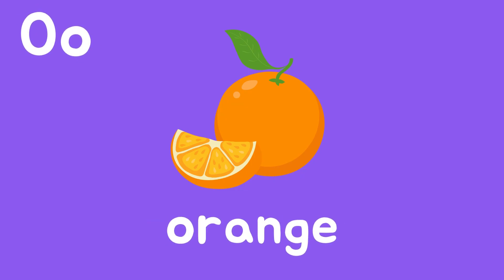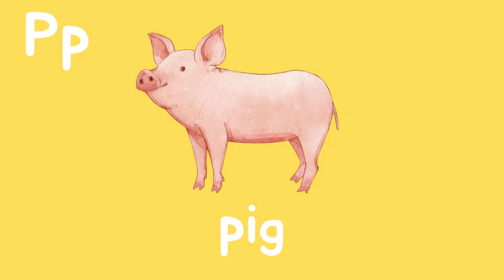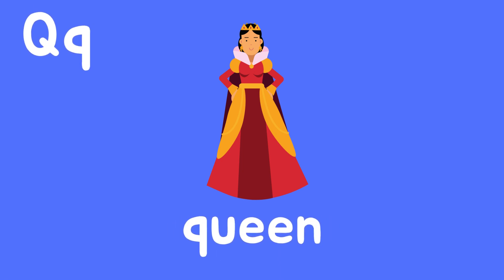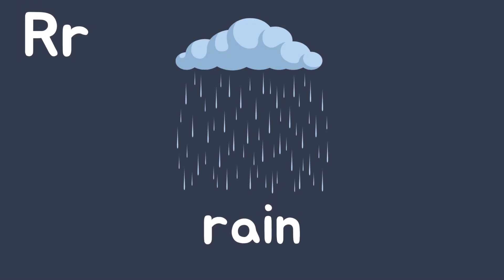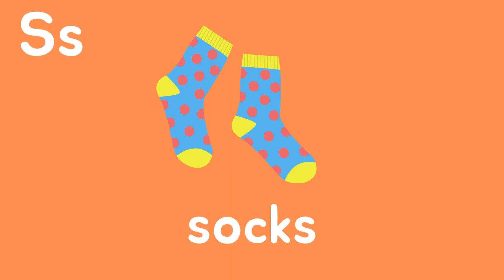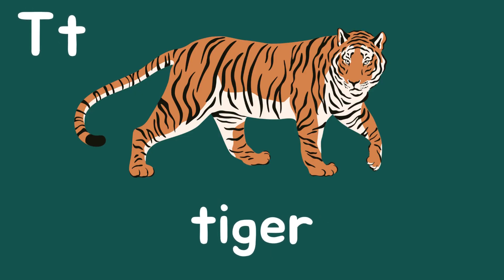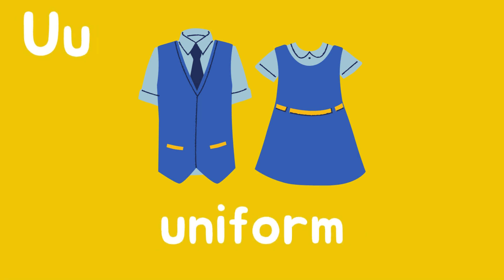O is for Orange. P is for Pig. Q is for Queen. R is for Rain. S is for Socks. T is for Tiger. U is for Uniform.